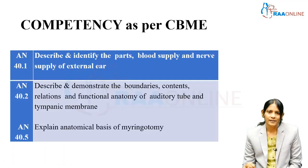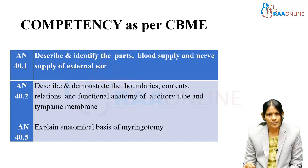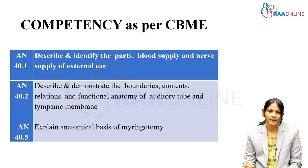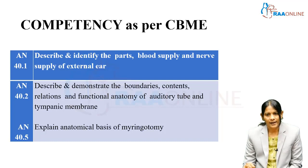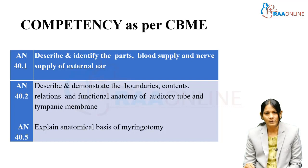As per the competency in the CBME curriculum, these topics are covered under AN40.1, 40.2, and 40.5. Under 40.1, we are going to see the external ear, its parts, blood supply, and nerve supply. Under 40.2, the auditory tube and the tympanic membrane are covered, and the clinical anatomy pertaining to the tympanic membrane, namely the anatomical basis of myringotomy, will also be explained in these sessions.